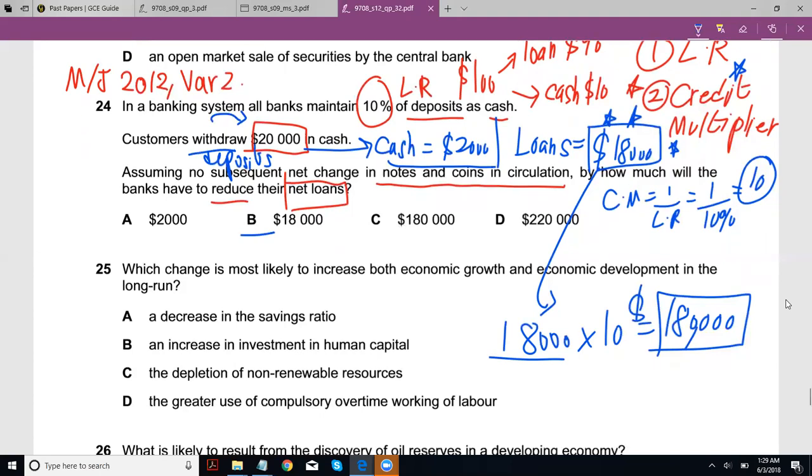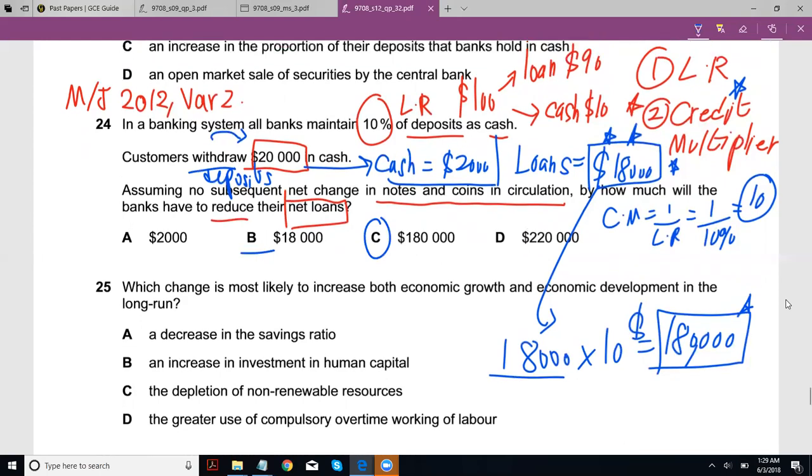So when you withdraw, they have to cut back on this $180,000 in order to pay that back. So the idea here is the individual bank would take the $2,000 as cash paid back, right? That would leave $18,000 for the individual bank to give back to the customer, which it would get from this particular thing.